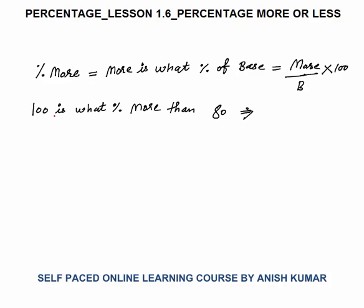For example, 100 is what percent more than 80? First, we calculate how much more 100 is than 80 — it is 20 more. So we calculate 20 upon base. The base is the number we are comparing with, which is 80. So 20 by 80 into 100, that is 1 by 4 into 100, which gives 25%.